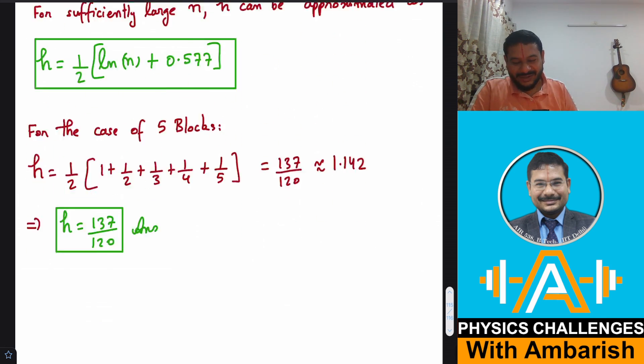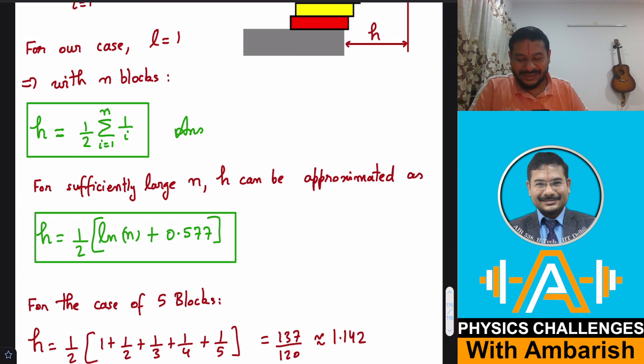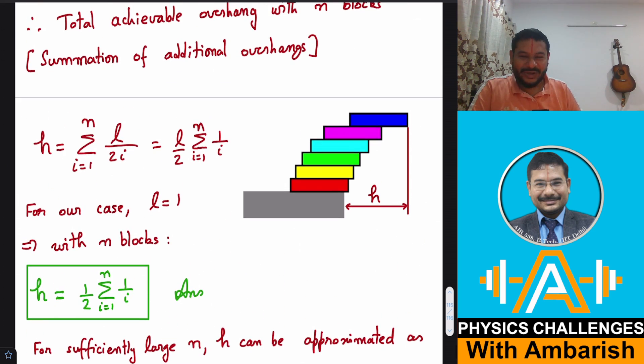So the total overhang with 5 blocks is 137/120 units. That was my analysis for the problem. I hope you enjoyed it — if you did, please give a thumbs up, and share this video with your friends through WhatsApp, Telegram, Discord, or whatever medium you use. Most importantly, if you haven't already subscribed, please hit that subscribe button — that's what keeps me motivated to make new videos frequently.